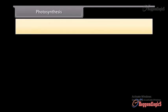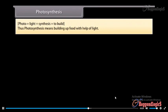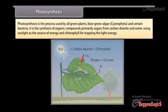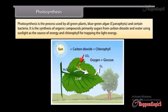Photosynthesis. Photo means light and synthesis means to build. Thus photosynthesis means building up food with help of light. Photosynthesis is the process used by all green plants, blue-green algae, cyanophyta, and certain bacteria. It is the synthesis of organic compounds, primarily sugars, from carbon dioxide and water using sunlight as the source of energy and chlorophyll for trapping the light energy.